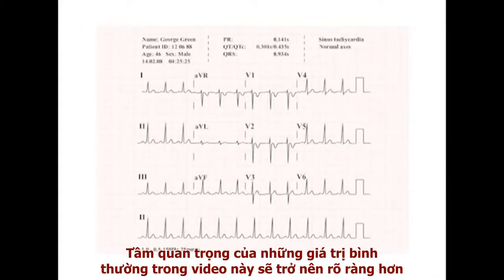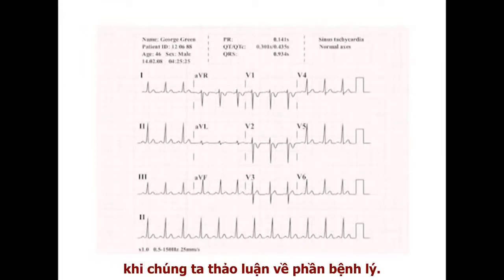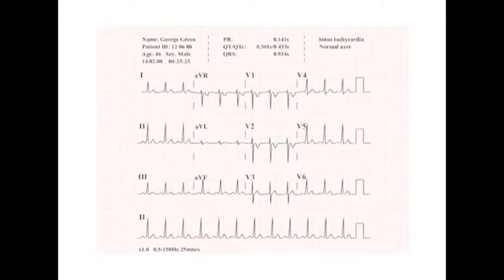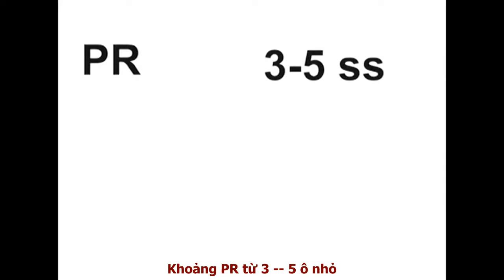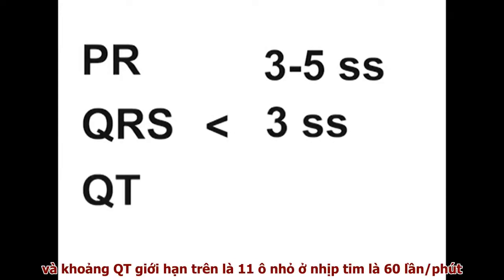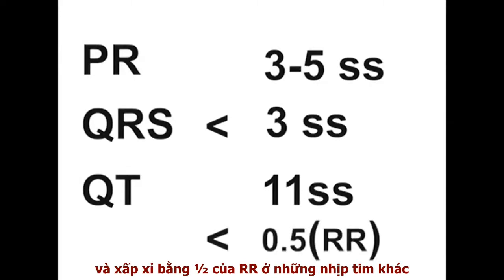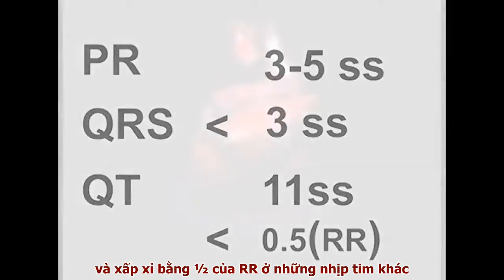The importance of the normal values outlined in this video will become increasingly obvious as we discuss the ECG in disease states. Memorise them. The PR interval: 3 to 5 small squares. The QRS complex duration: less than 3 small squares. And the QT interval: an upper limit of just over 11 small squares at a heart rate of 60 beats per minute, and approximately less than half the RR interval at other heart rates.